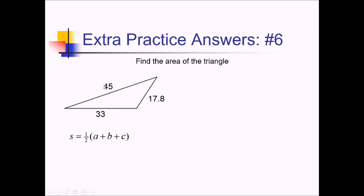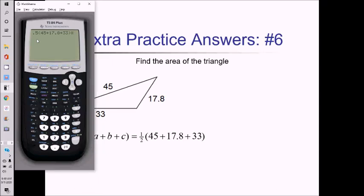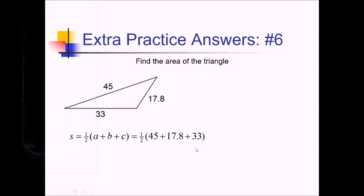So this is one half times 45 plus 17.8 plus 33. Although it doesn't really matter what order we add those in. Let me use the calculator for this part. So entering that and pressing enter, we get an S value of 47.9.